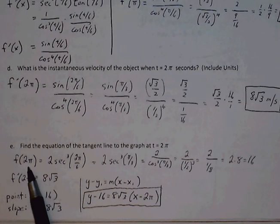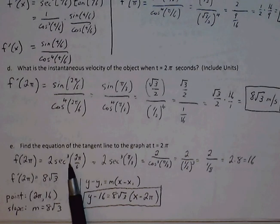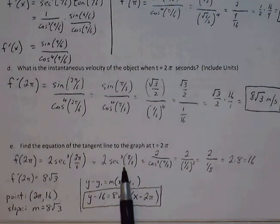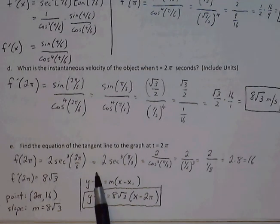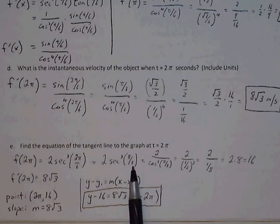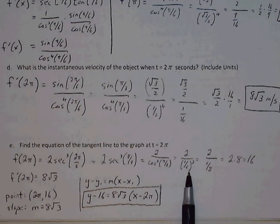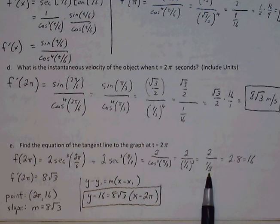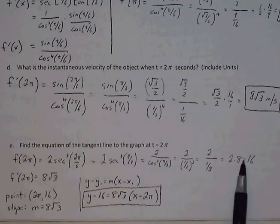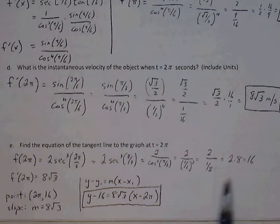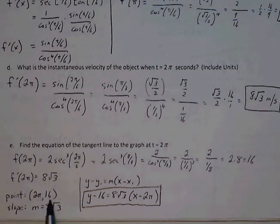So if I plug 2 pi into the original function, 2 secant of 2 pi over 6 cubed, 2 pi over 6 reduces to be pi over 3. Secant of pi over 3, same thing as cosine of pi over 3 in the denominator, that's simply going to be 1 half. 1 half cubed is 1 eighth. Take the reciprocal of that, 2 times 8 is 16. So that's my ordered pair. My ordered pair is simply 2 pi and 16.